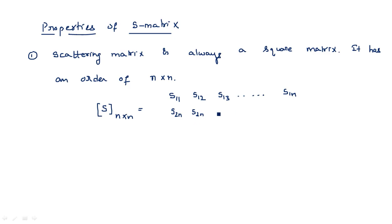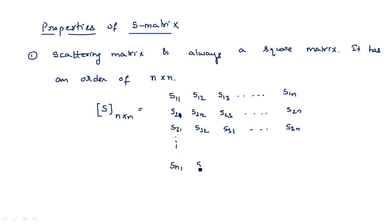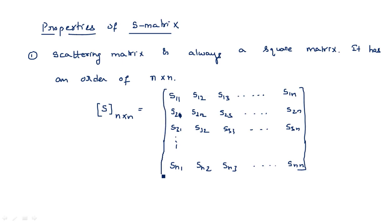The matrix continues with S21, S22, S23 up to S2n; then S31, S32, S33 up to S3n; and finally Sn1, Sn2, Sn3 up to Snn. So the full matrix has a size of n×n, where n is any number representing n rows and n columns.